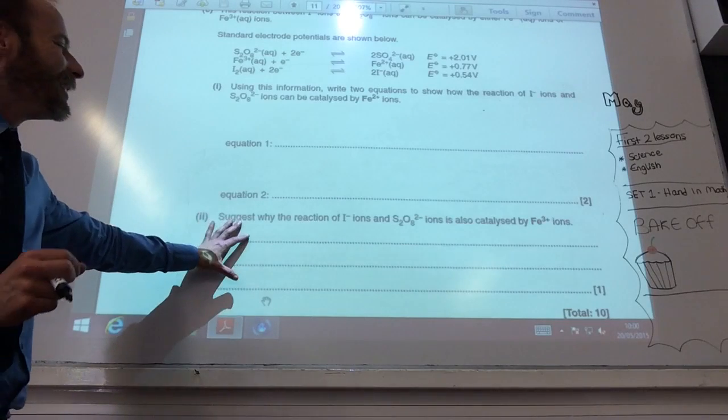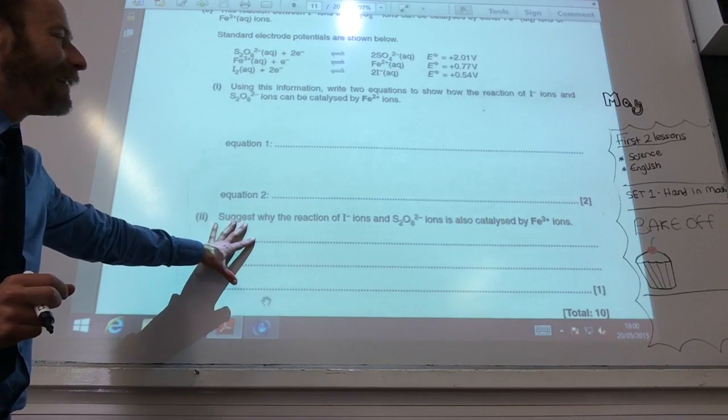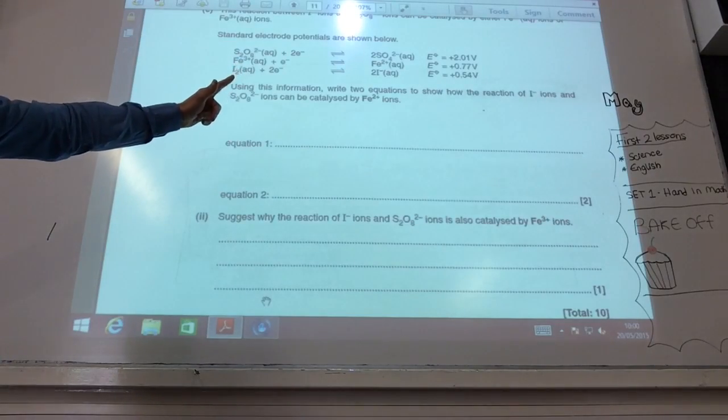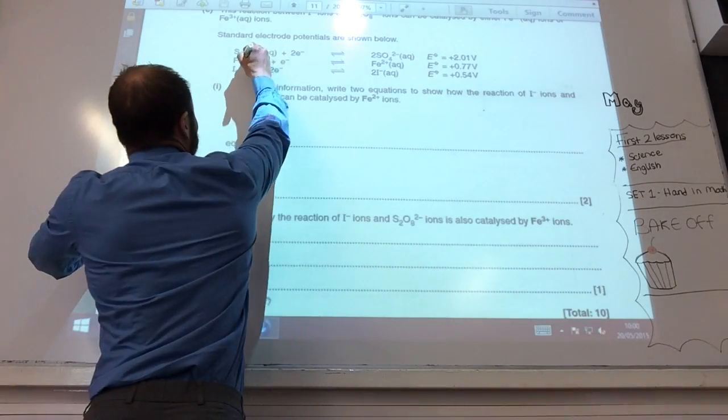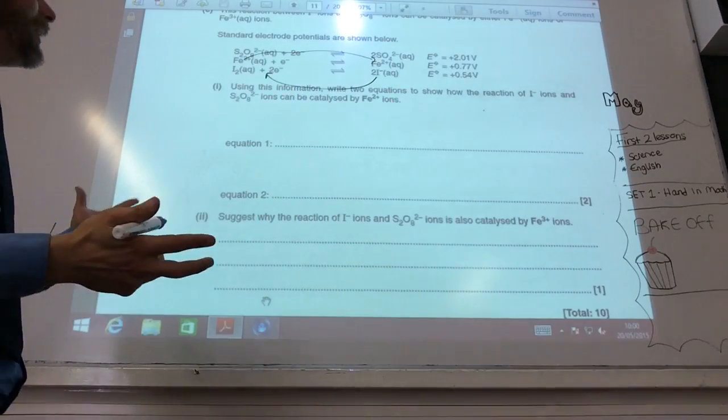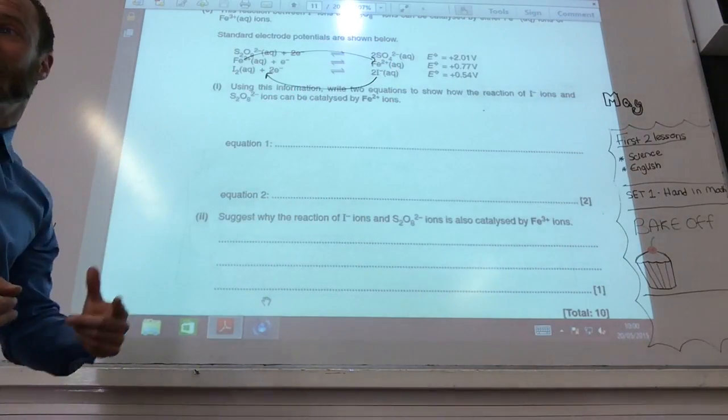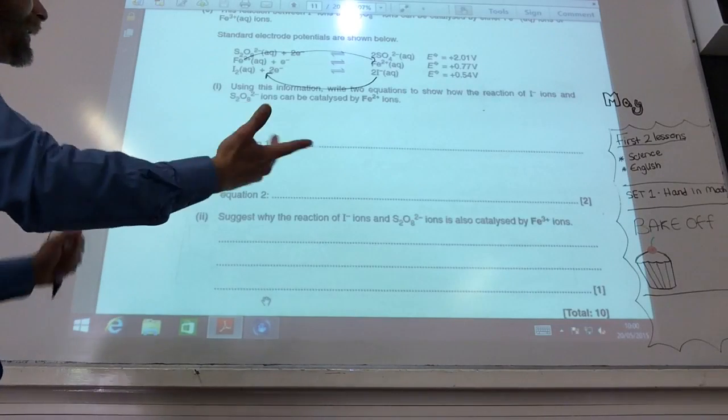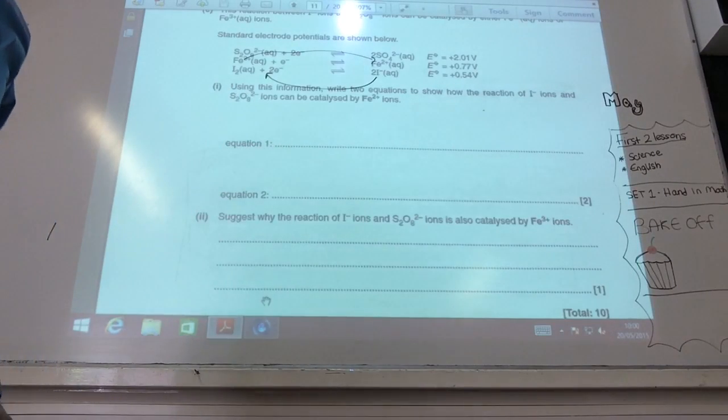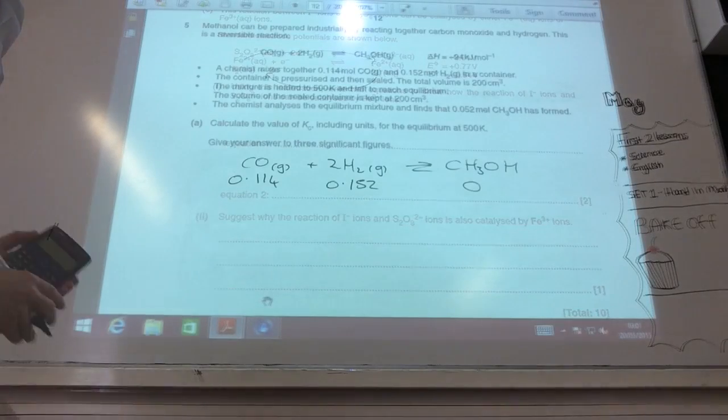Suggest why this reaction is also catalyzed by Fe 3 plus. Well, if you have a look at your electric potentials, Fe 3 plus would go that way, and it would react with iodide ions. So it's quite feasible for Fe 3 plus to react with iodide ions based on the electric potentials.